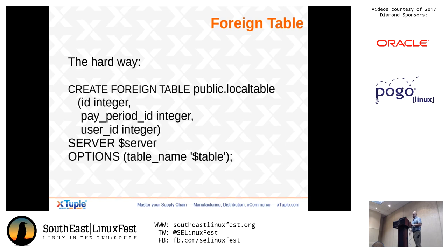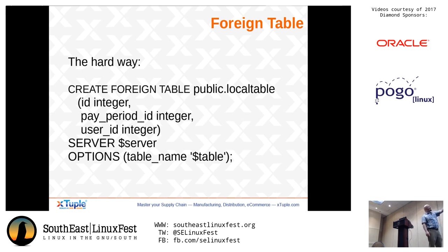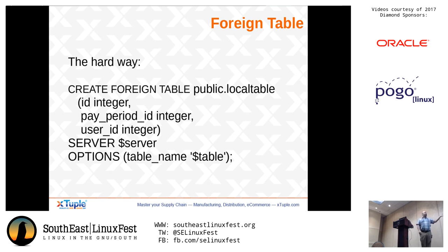The foreign table. There are a couple of ways to import foreign table information. This is where we define what the remote schema is and how we're going to access it locally. The CREATE FOREIGN TABLE options basically say: I want to create a table locally in our public schema called local_table. I have three columns — in this case an ID, a pay period ID, and a user. We're going to be using the server we defined previously, and the options are going to be the table name we're connecting to. This is what I call the hard way — you're defining the schema of the remote and making a local mapping.